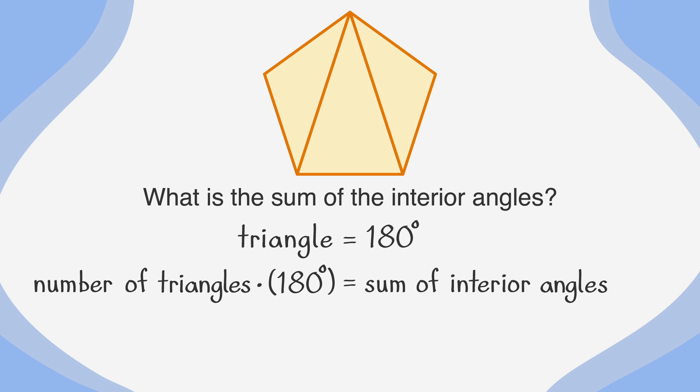Multiplying the number of triangles within the pentagon by 180 degrees will give you the sum of the interior angles. Since we have three triangles, our equation is 3 times 180 degrees equals x. After multiplying, we get x equals 540 degrees. We've learned a lot about figures and angles, and now we have two strategies for solving for the sum of the interior angles of polygons. Let's apply some of this information to solve a problem.